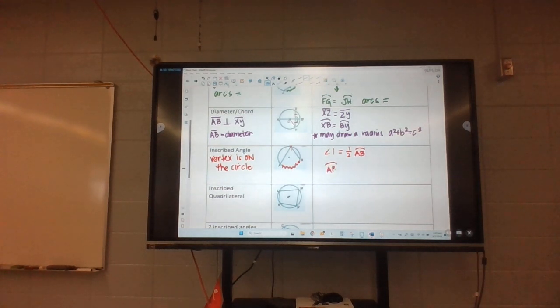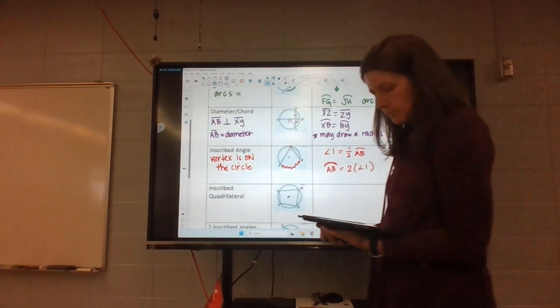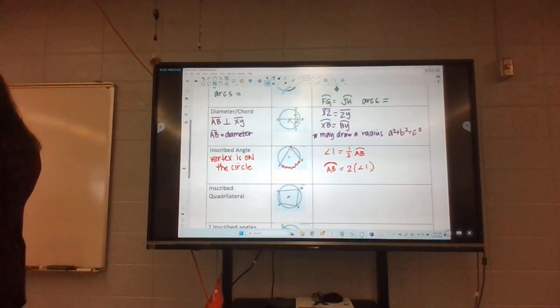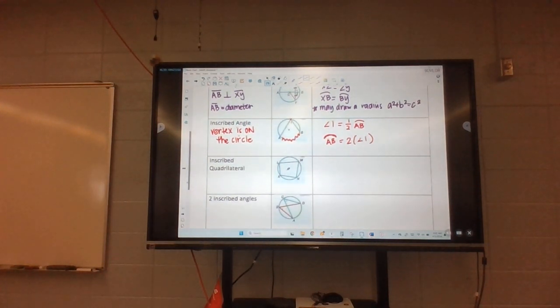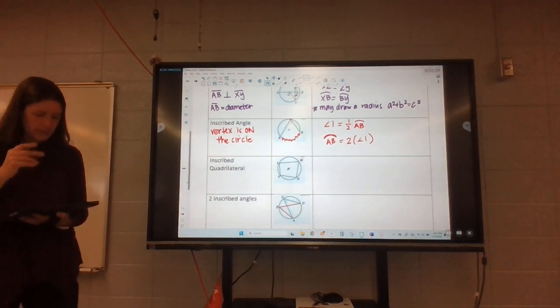Or the arc is going to be double the angle. And just make sure you're being precise about it's an arc versus like a segment or something like that. So using the little curve, the arc is that outside piece.